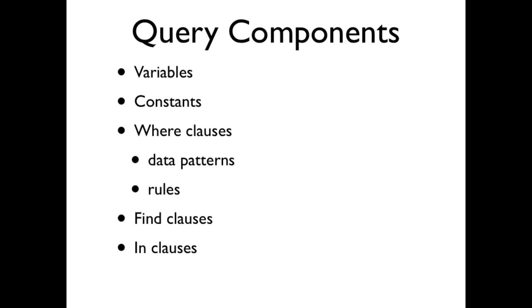A Datomic query is composed of several building blocks. A variable represents a piece of information you're looking for, a blank slot to be filled in by the query engine. A constant is a piece of information you already have, and acts as a constraint on what the query returns. A where clause is a collection of data patterns and rules that specify what you're looking for. A find clause specifies which variables you want returned as results, and an in clause lets you name inputs for when your query has more than one input.